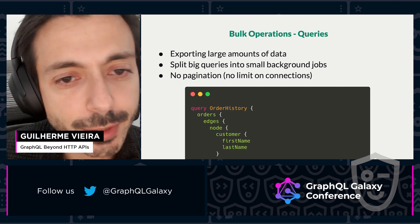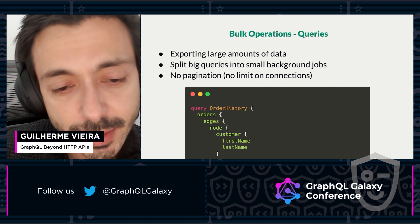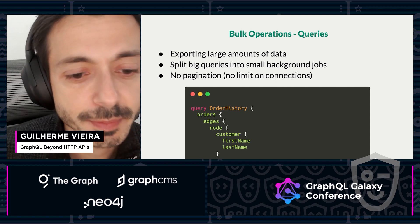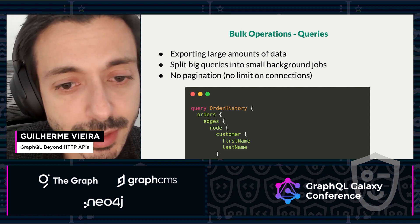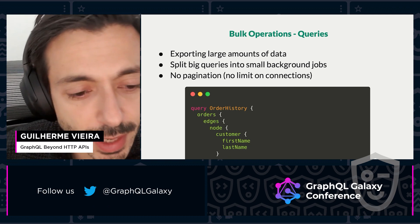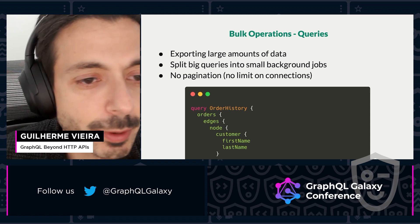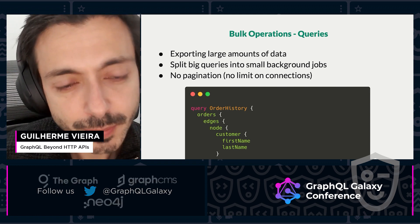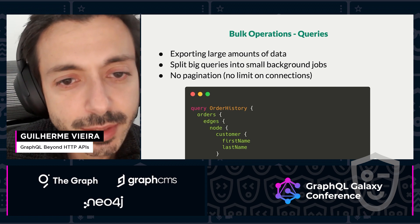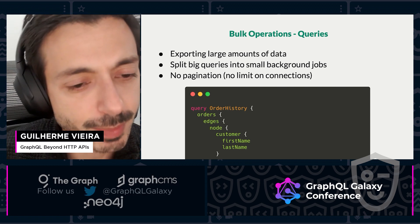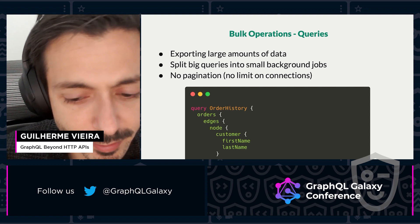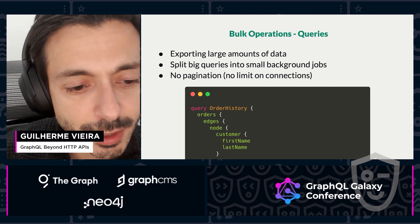Another use case is for bulk operations. Bulk operations are background jobs, but they handle large amounts of data, both for importing and exporting. For queries, it's very useful when you want to export large amounts of data. As you can see here, for orders it's a connection, but we are not limited to, for example, 100 records per page. Instead of having to paginate and get all the data for all orders, you can split this huge query into smaller pieces and then assemble all the data at the end. This way, it's fast and safe to get this kind of huge data export.